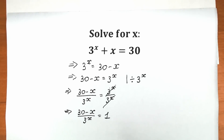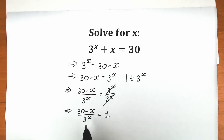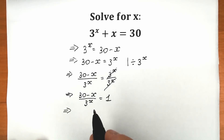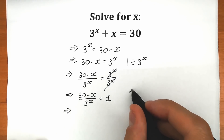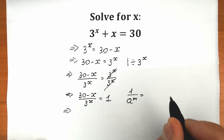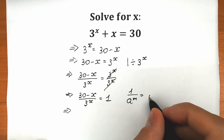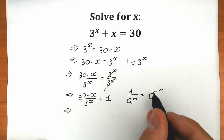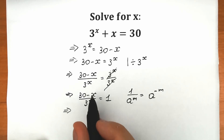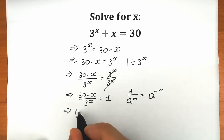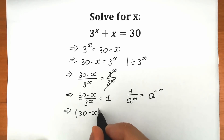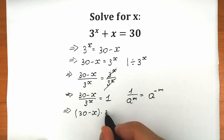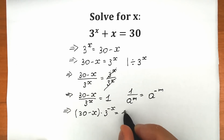Next, let's bring 3 to the power x from the denominator to the numerator. You need to know the property: 1 over a to the power m equals a to the power minus m. Applying this, we get: 30 minus x times 3 to the power minus x equals 1.